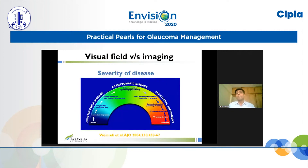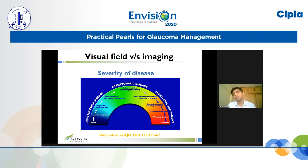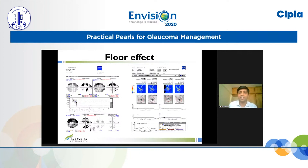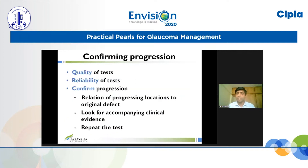There is always a debate on visual fields versus imaging for early and accurate detection of progression. An important factor that decides which test to choose is the severity of disease. In early and moderate disease, imaging methods are probably better at picking up change; in moderate to advanced disease, visual fields are better. The primary reason is the floor effect in structural measurements — here is an example where the visual field shows obvious progression but the RNFL maps show no change because structural measurements reach a floor at a certain level of disease severity.